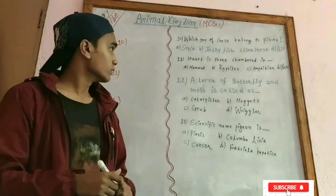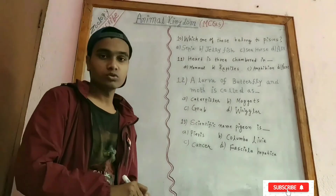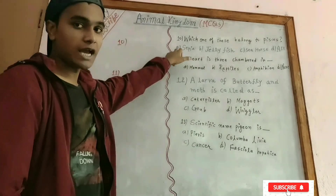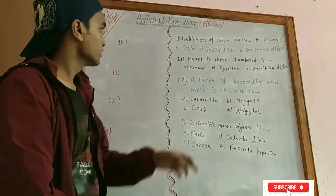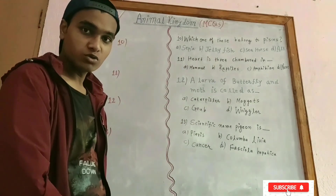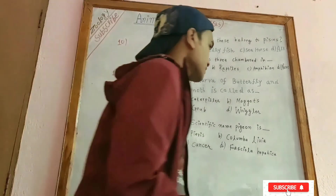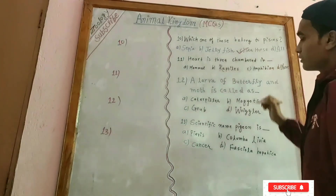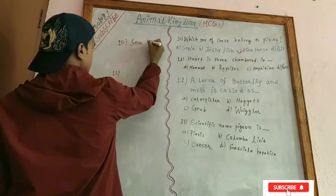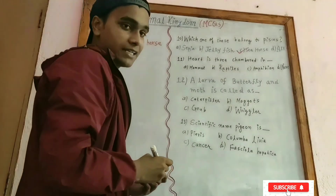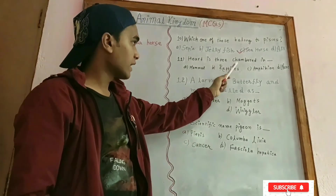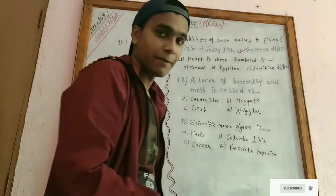Question number 10: which one of these belongs to Pisces? Options include Sepia and others. Regarding heart chambers: fish have 2 chambers, amphibians have 3 chambers, reptiles have 3 chambers (incomplete 4), mammals have 4 chambers, and birds have 4 chambers.